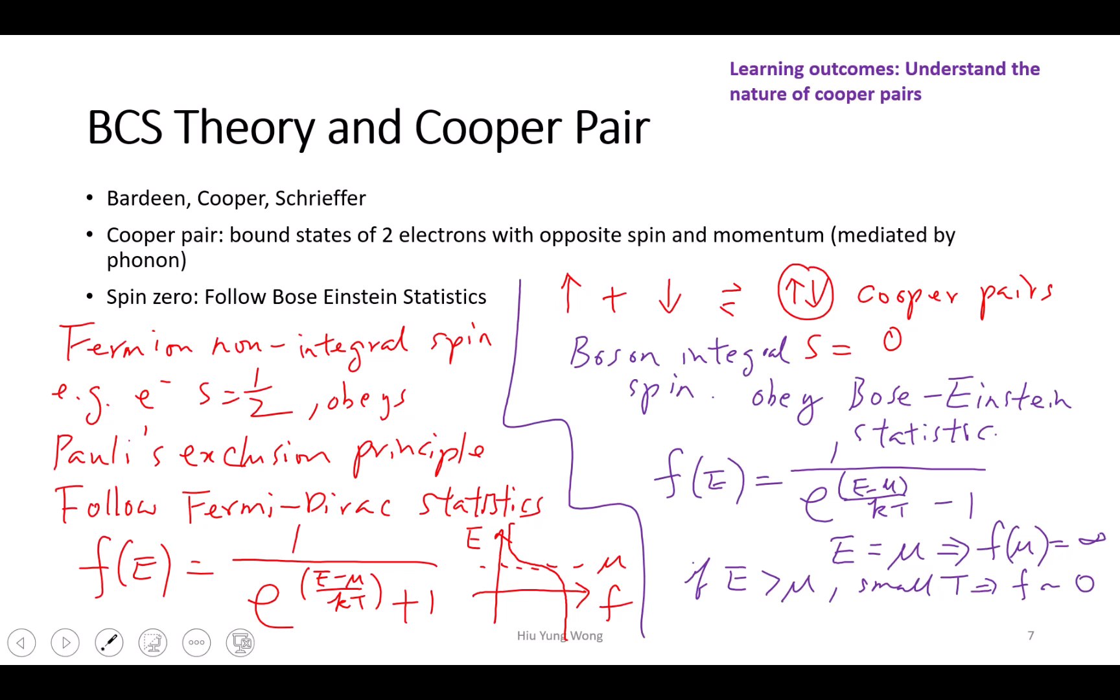Electrons in the superconductor pair up at low temperature. Very strange - it's difficult for people to accept at that moment why two negative charges would pair up. The reason is because they have the phonon as a mediation. You can imagine you have a nucleus which is positive, it attracts this electron a little bit and then attracts another electron to bring them together. It's like having two friends who don't get along - you talk to both of them and bring them together.